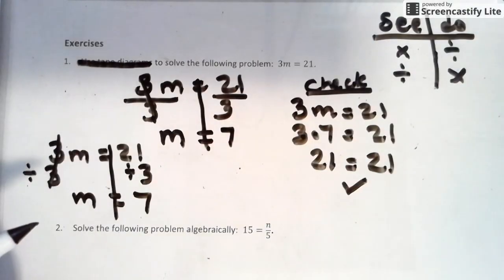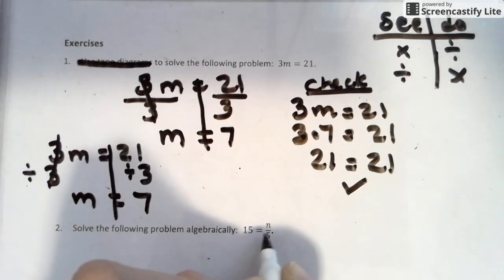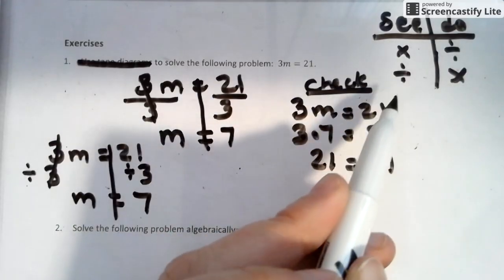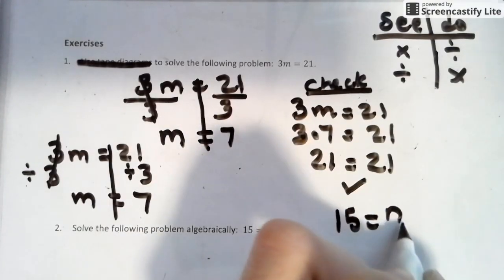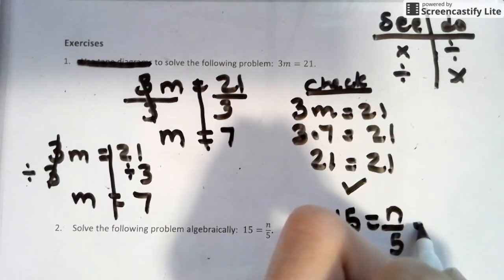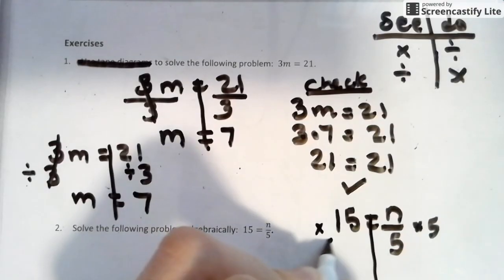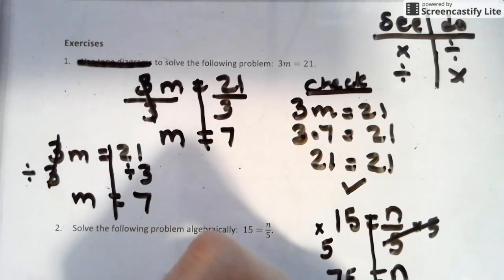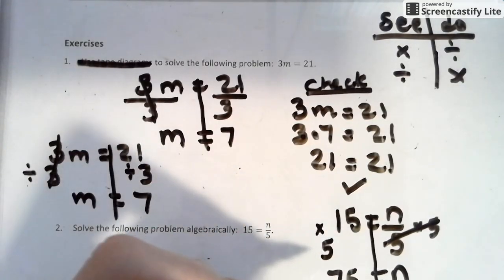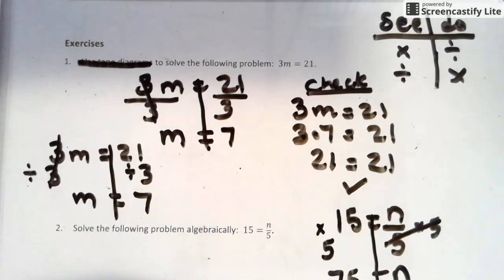All right, so here we start off with division. See, n divided by 5, so the opposite of division is multiplication. So when we have this, we have 15 equals n over 5. We want to times by 5. Remember, whatever we do to one side, we have to do to the other side. So n equals 75. That is a 75. I just got big when I wrote it. And checking is done the same way. Now remember, this that's cut off, this is 75.